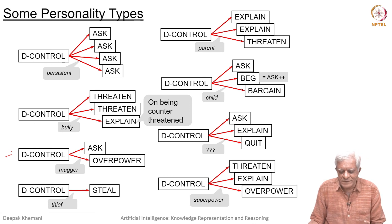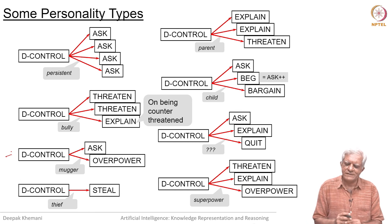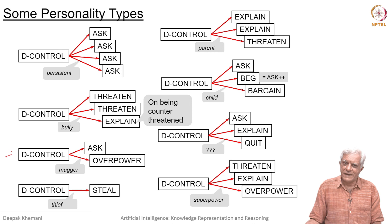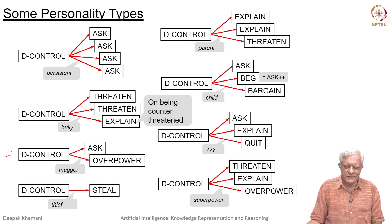So what we are trying to say here is that a knowledge-based story understanding system can be equipped with knowledge of goals, the plans that can be used to achieve those goals, and the actions that can be part of plans. We will take a break here and then come back and see how one can use this knowledge to understand stories.